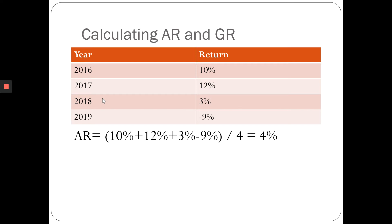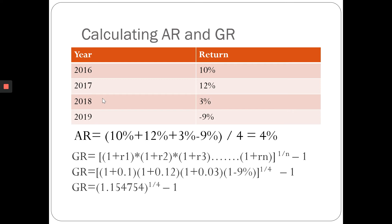The formula for geometric return is: (1 + r₁) × (1 + r₂) × (1 + r₃) × ... × (1 + rₙ), all raised to the power of 1/n, then minus one — where n is the total number of returns. In this case we have four returns, so n equals four.